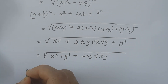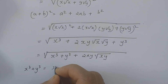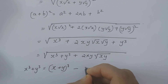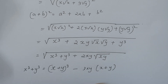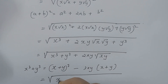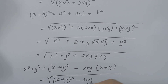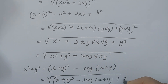We know the algebraic identity: x cubed plus y cubed equals (x plus y) all cubed minus 3xy times (x plus y). We apply this here and get the square root of (x plus y)³ minus 3xy(x plus y) plus 2xy√xy.